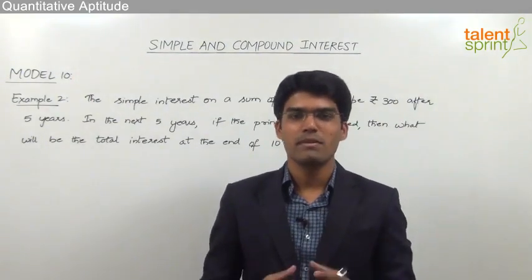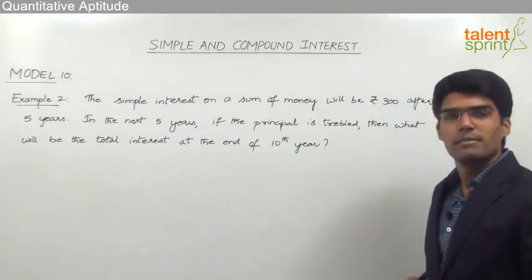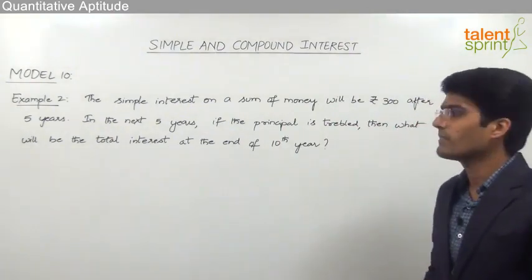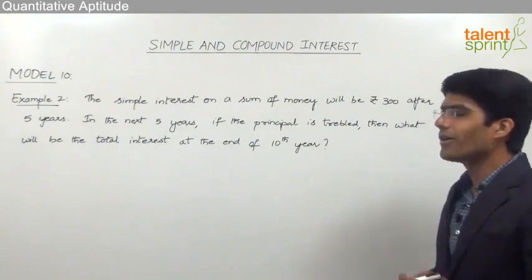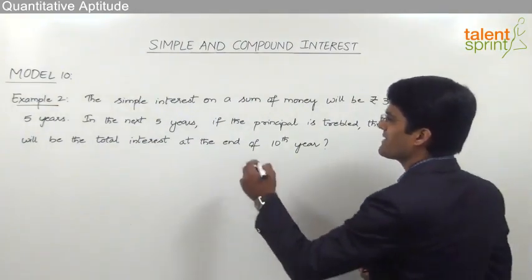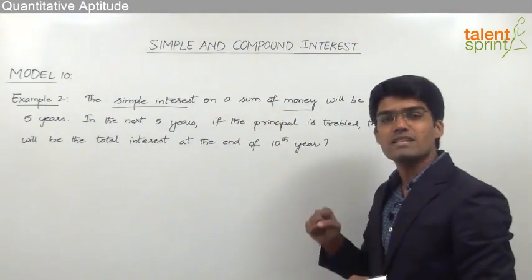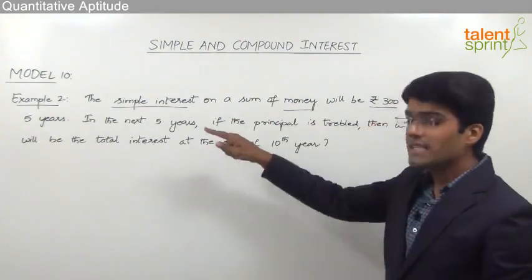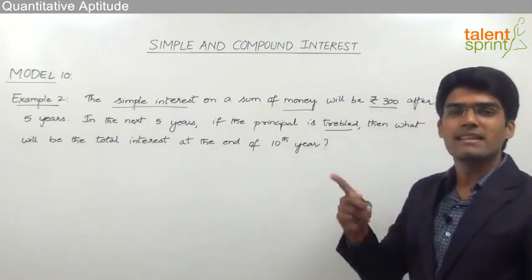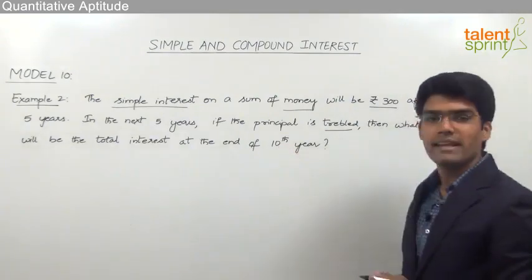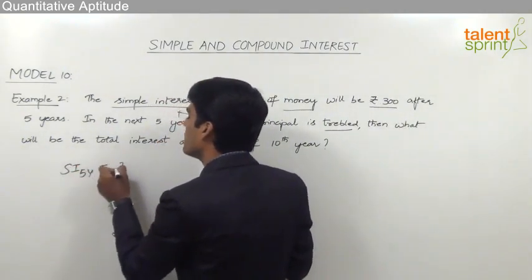Let us now take another typical example based on simple interest. The question is: the simple interest on a sum of money will be Rs 300 after 5 years. In the next 5 years, if the principal is trebled, then what will be the total interest at the end of the 10th year? The question states that the total interest for the first 5 years is Rs 300, and the principal becomes 3 times in the next 5 years.